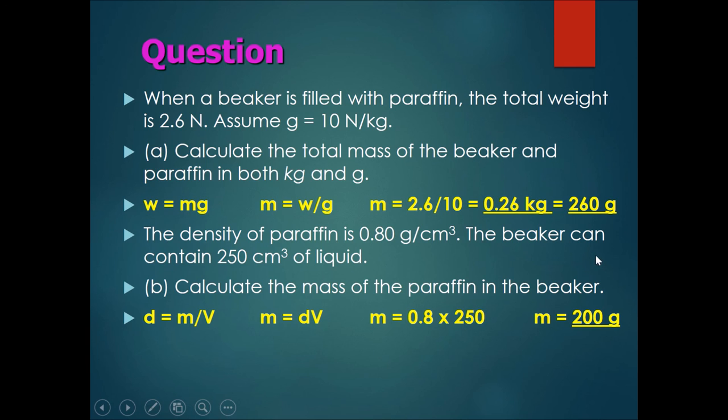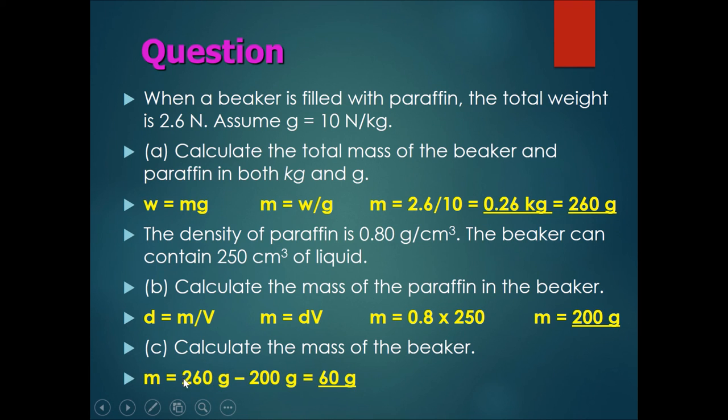So let's complete the question with this last part. Calculate the mass of the beaker. Basically, now we have the combined mass of beaker and paraffin is 260 grams and the mass of paraffin only is 200 grams. So the mass of beaker and paraffin minus the paraffin, 260 minus 200, will give me the final mass of the beaker, 60 grams.